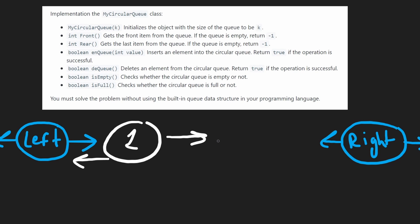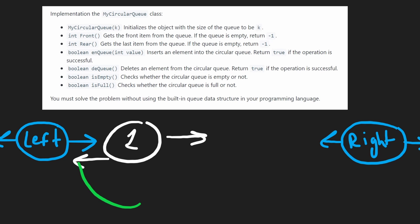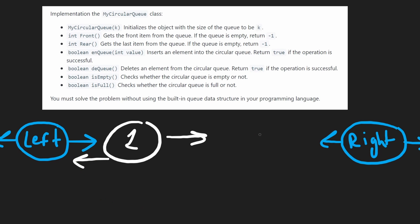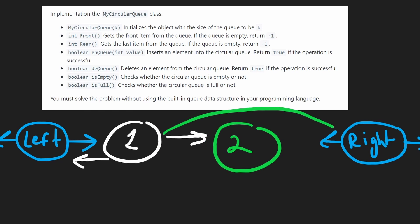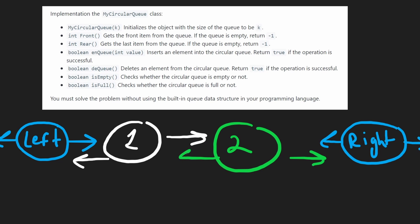If we have to add another value — say two — we always add to the right side since that's the end of the queue. The pointer from the current last node, previously pointing at the right dummy, now points at the new node. The right dummy's previous pointer, previously pointing at the old last node, now points at the new node. The new node's next and previous pointers are set accordingly.